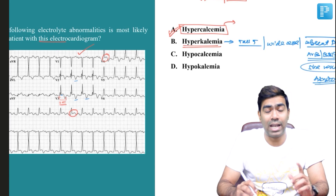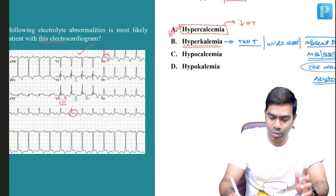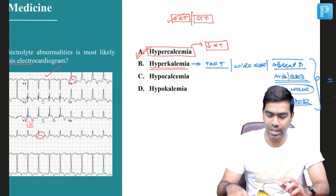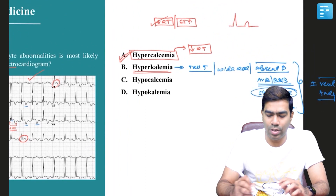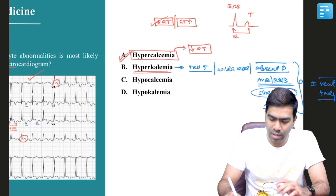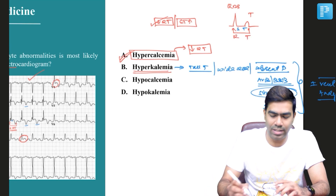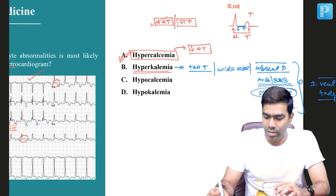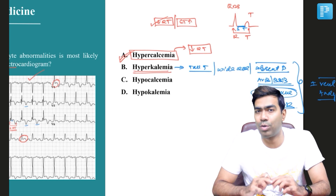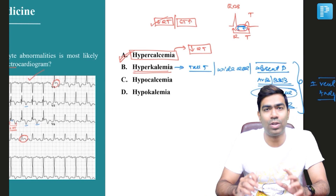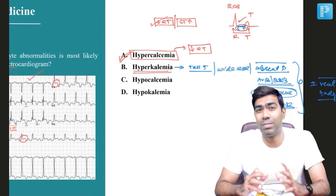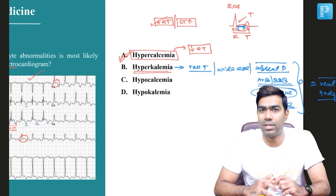What are the features of hypercalcemia? The number one feature is the short QT interval. The ST segment is the one that will be affected with regards to calcium changes on the EKG. Remember, calcium-related changes affect the phase 2 plateau phase of the action potential curve. The ST segment is determined by the phase 2 plateau phase of the action potential curve, and that is why the ST segment will be affected by calcium-related disturbances in the body.